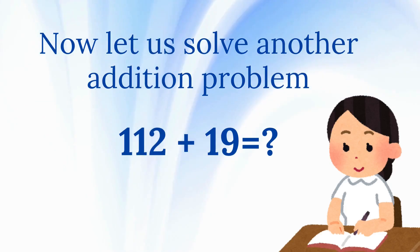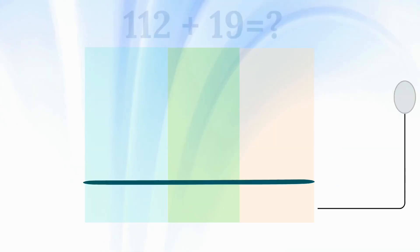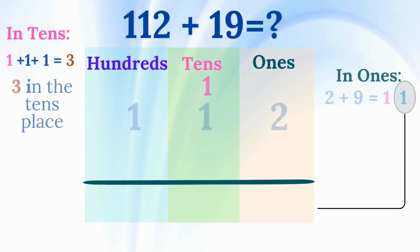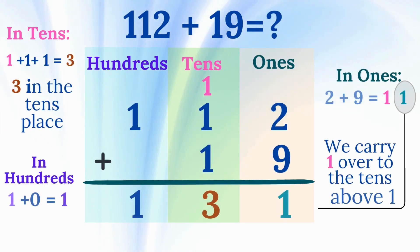Now let us solve another addition problem: 112 plus 19. We stack the numbers so that the ones, tens, and hundreds are lined up. The ones place is on the right. The tens place is in the middle. The hundreds place is on the left. Start with the ones place. 2 plus 9 equals 11. We write 1 in the ones place and we carry the other one to the tens place.